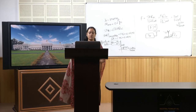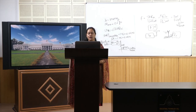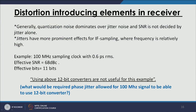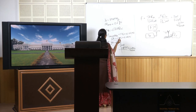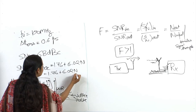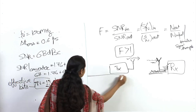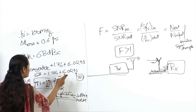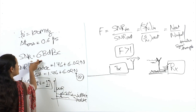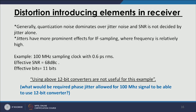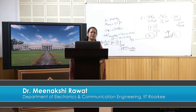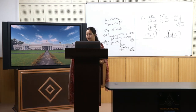As an assignment: what is the required phase jitter allowed for a 100 MHz signal so that it can effectively use a 12-bit converter instead of 11 bits? Using n = 12 in the converter SNR formula gives the required SNR, which is then plugged back into SNR_dB = −20·log10(2π·f_in·tj_rms) to find the required tj_rms. The answer will be revealed in the next lecture.